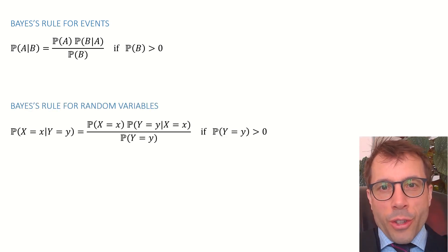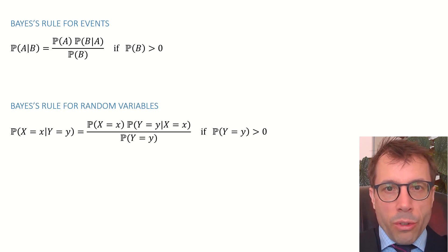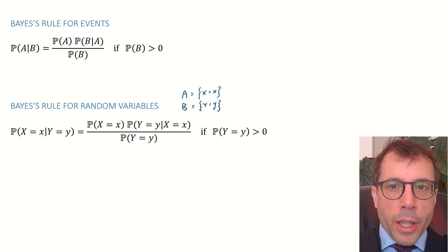Now, we could just glibly turn this into a statement about a pair of random variables, call them x and y. The probability of observing x equals little x, given that y equals little y, should be given by this formula here. I've just defined my two events A and B appropriately, and I plugged in Bayes' rule for events.